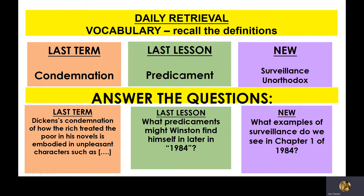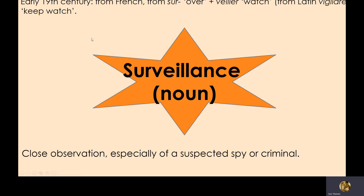Surveillance — we've actually looked at this word briefly before, but it's worth revisiting. Surveillance is close observation, especially of a suspected spy or criminal. CCTV, reporting, and secret police all come under the banner of surveillance.